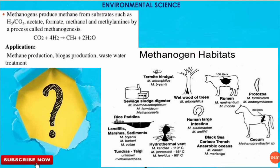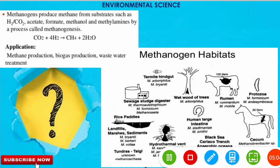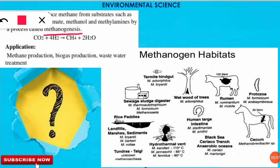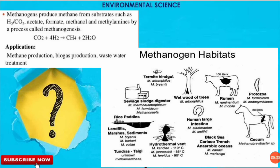Methanogens produce methane from substrates such as H₂, CO₂, acetate, formate, methanol, and methylamines by a process called methanogenesis. Methanogenesis is a form of anaerobic respiration where oxygen is not used. The reaction of CO₂ with H₂ gives rise to methane and water. Applications include methane production, biogas production, and wastewater treatment.